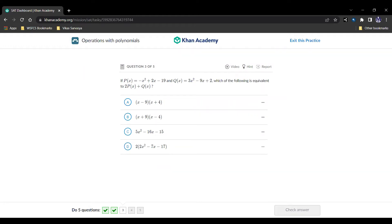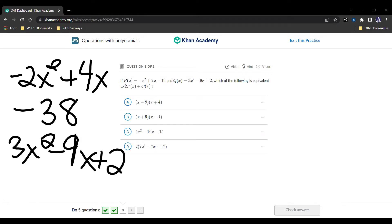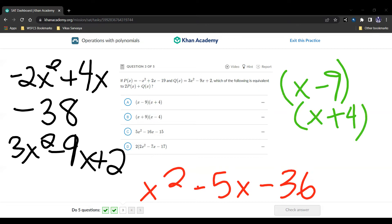2p of x is going to be negative 2x squared plus 4x minus 38. q of x is going to be 3x squared minus 9x plus 2. So we add those together, then we get x squared minus 5x minus 36. So that is the correct factor. And we see here, we see that it's going to be answer choice A, and that's our answer. Let's keep going.